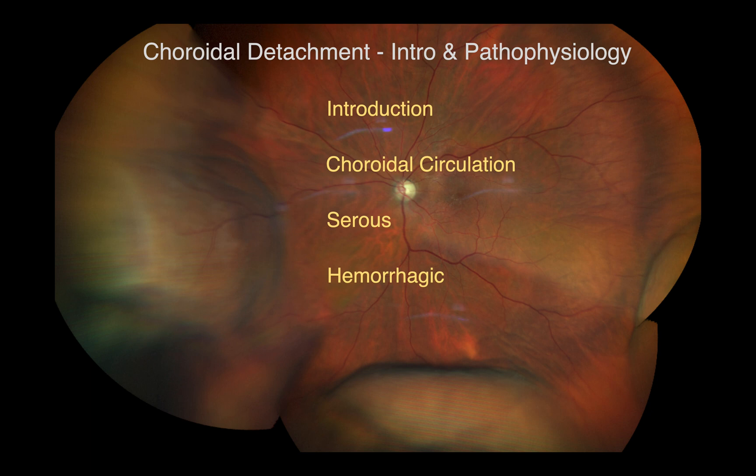A condition called uvoscleral syndrome occurs when there is disruption of drainage of fluid from the posterior eye and is associated with scleral thickening.